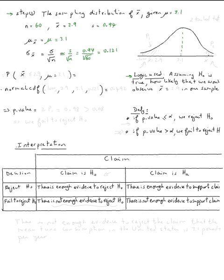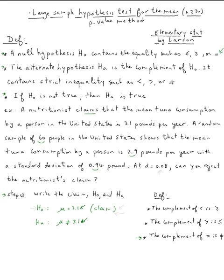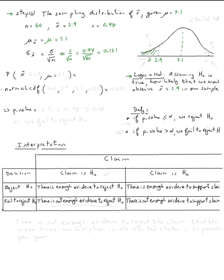Now the logic is, assuming H₀ is true, we need to see how likely that we would observe x̄ equal 2.9. Since this is 3.1, so 2.9 will be right here. We want to find this probability, but not only that, because it's not equal, we need to find how likely we will get x̄ this small and x̄ too large.